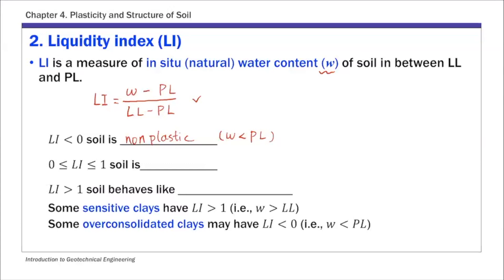In between zero and one, soil is plastic, and this is when the natural water content is in between its plastic and liquid limit. And when LI is greater than one, soil behaves like a viscous fluid. This happens when natural water content is greater than its liquid limit.